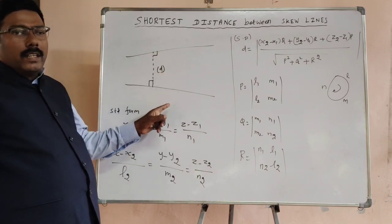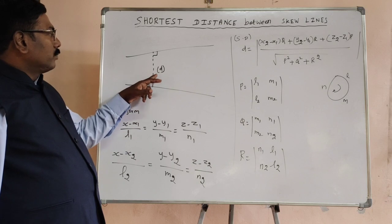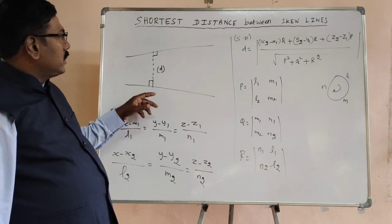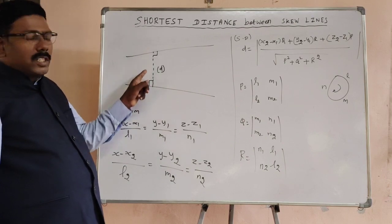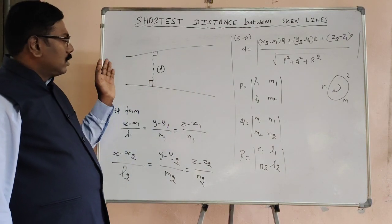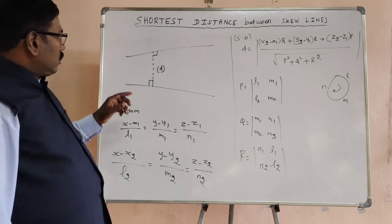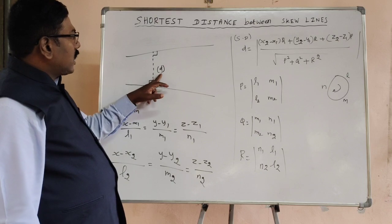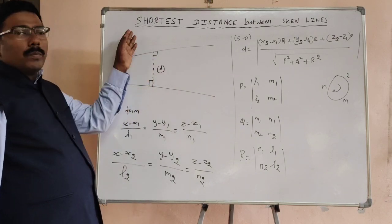This distance between two lines, the shortest distance between these two skew lines is the line which is perpendicular to both the skew lines. Consider this line and this line. The shortest distance is perpendicular to both the two lines.